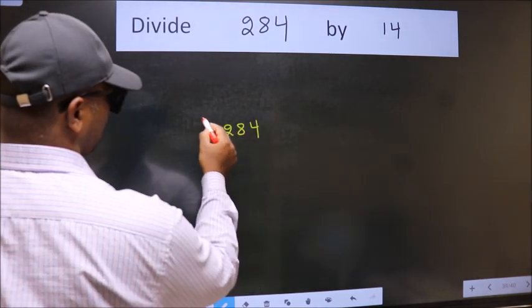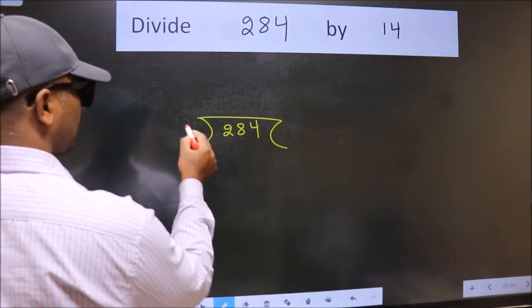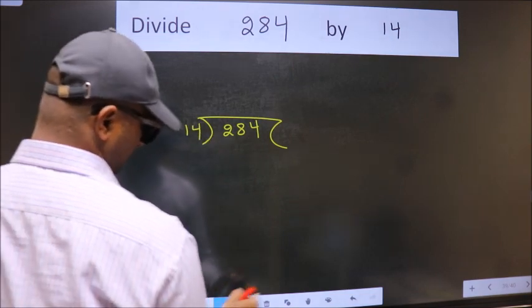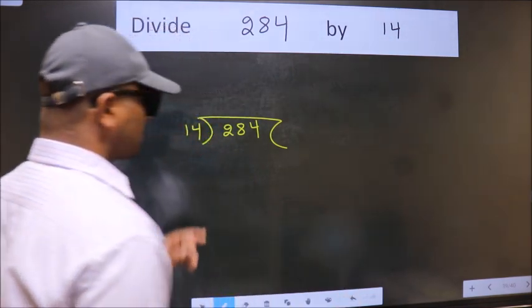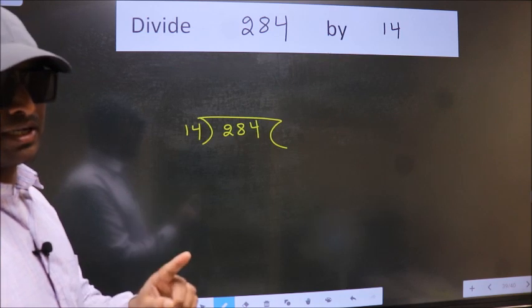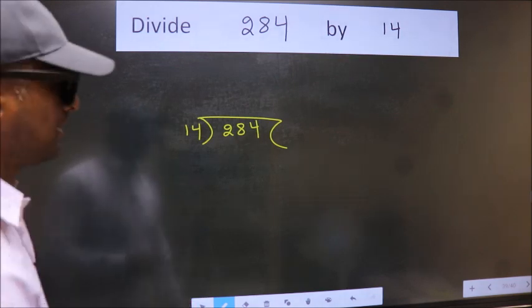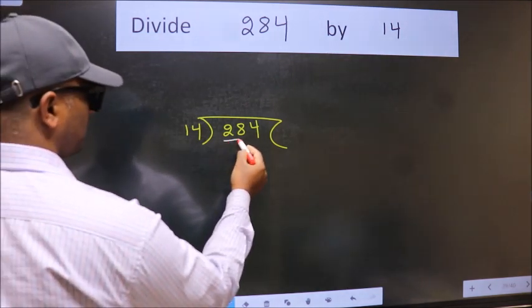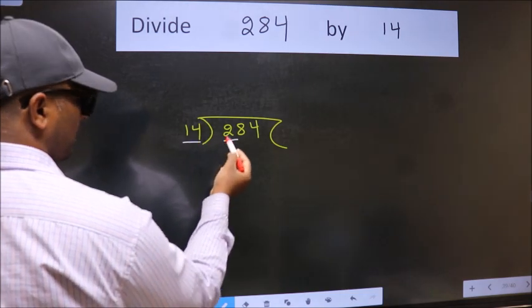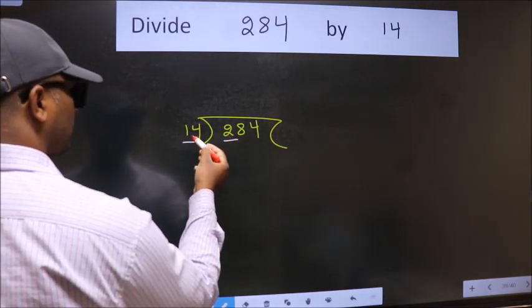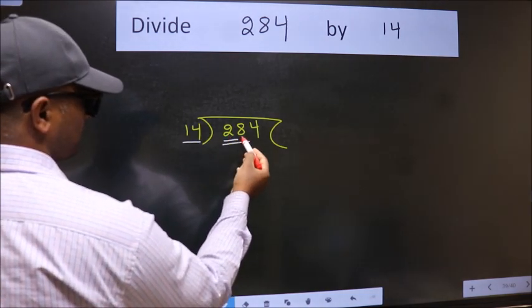284 here. 14 here. This is your step 1. Next. Here we have 2. Here 14. 2 is smaller than 14. So we should take 2 numbers, 28.